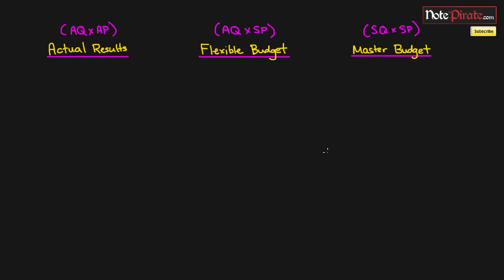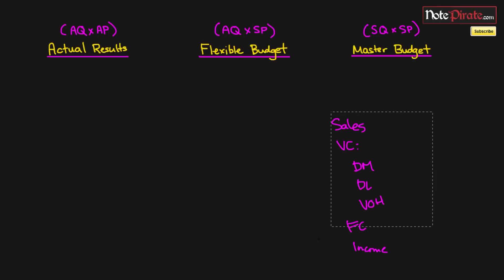You'll actually see a chart like this come up very frequently within your variance analysis chapter. It displays the master or static budget, the flexible budget, and also your actual results, and variances are derived from the differences between these three budgets. For each of these budgets we'll see a similar format: sales, variable costs like direct materials, direct labor, variable overhead, fixed costs, income, and so on — just like a typical budget, but with different numbers in each column.